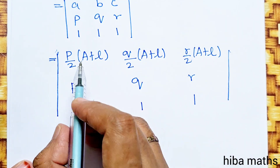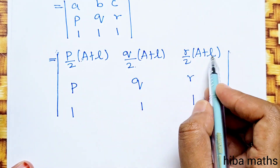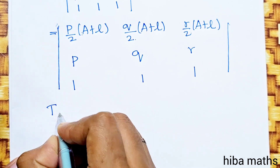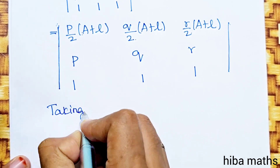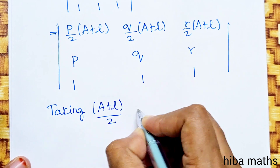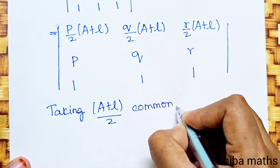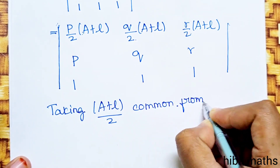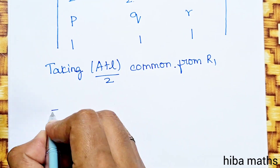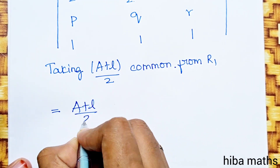The first row becomes (a+l)/2, (a+l)/2, (a+l)/2 — all entries are (a+l)/2. Take (a+l)/2 as a common factor from R1. The common value is (a+l)/2.